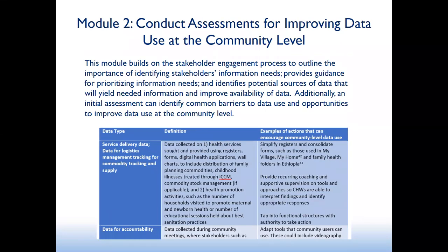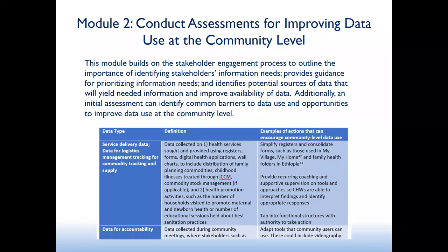Module two is about conducting assessments for improving data use at the community level. It builds on the stakeholder engagement process to outline the importance of identifying stakeholders' information needs, providing guidance for prioritizing those needs, and identifying potential data sources. An initial assessment can also identify common barriers to data use and opportunities to improve it at the community level. The guide includes a table helping describe different types of data — such as service delivery data and accountability data — with definitions and examples of actions to encourage community use.